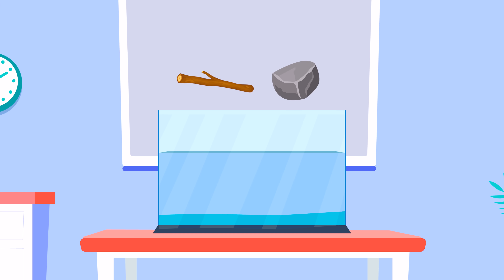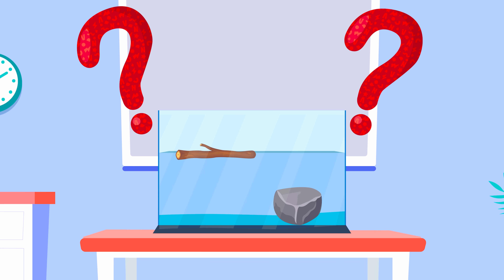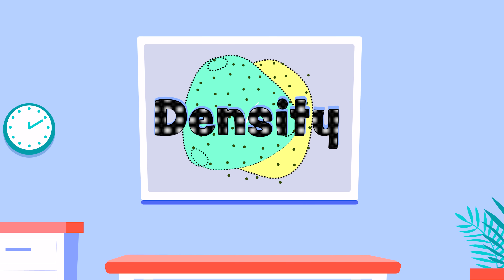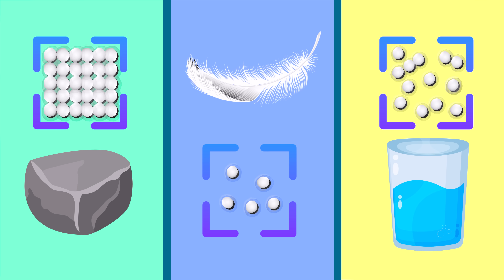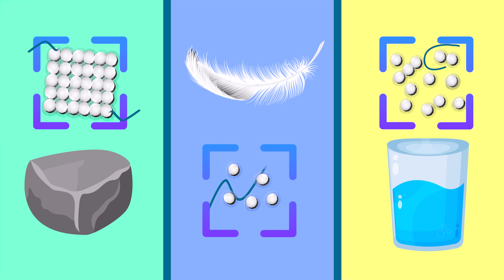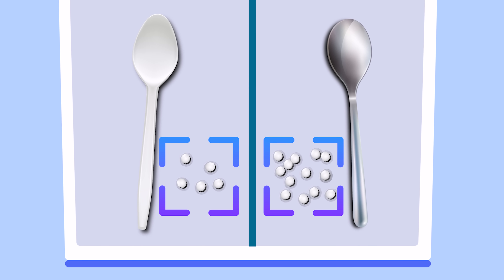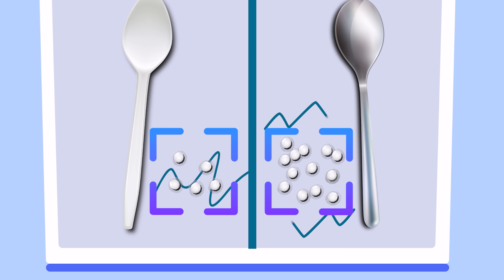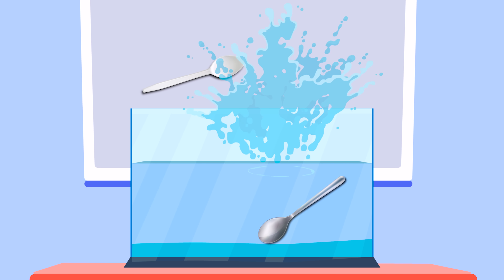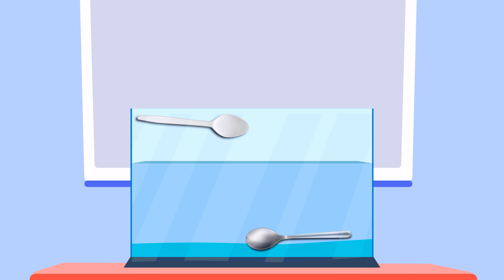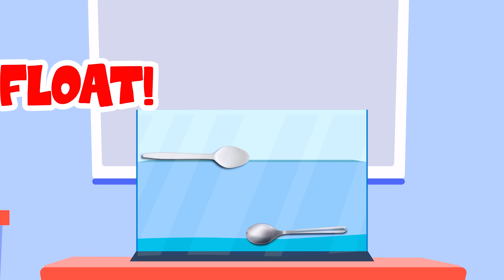Why do some stuff float and why do some stuff sink? The answer is something called density. Everything is made out of tiny particles that we can't see. A plastic spoon and a metal spoon have the same shape and size, but the particles in the metal spoon are closer to each other. Water has density also. The density of metal is more than the density of water, so it sinks. The density of plastic is less than the density of water, so the plastic spoon floats.